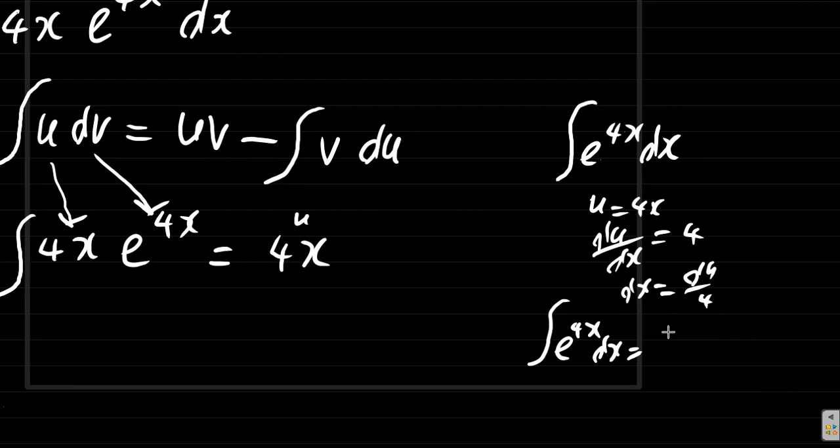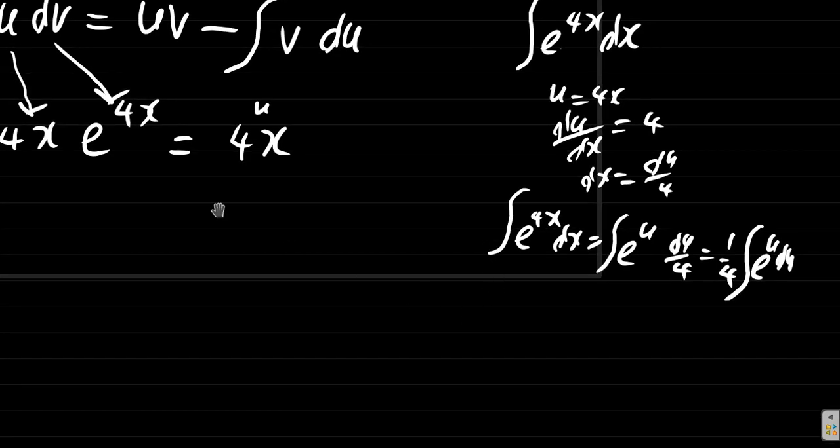the integral of e to the u, du over 4. When you integrate e to the u, what do you get? It's e to the u, so it's a quarter e to the u